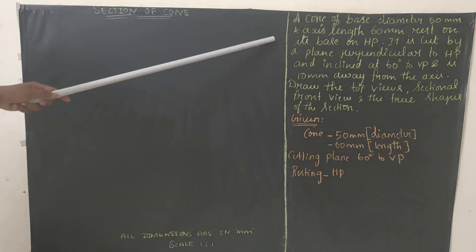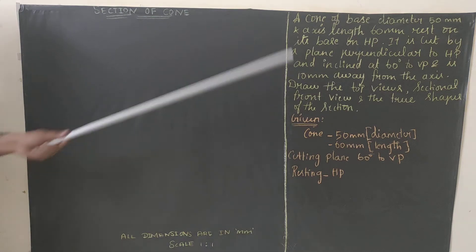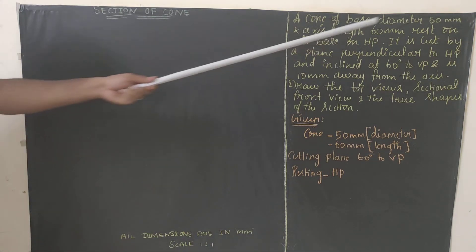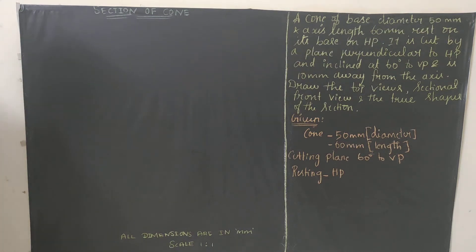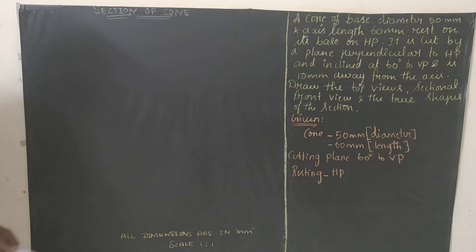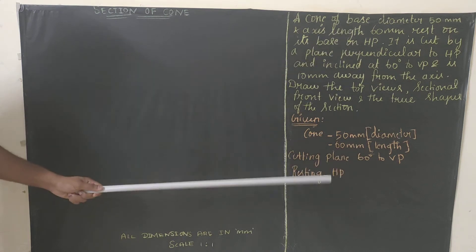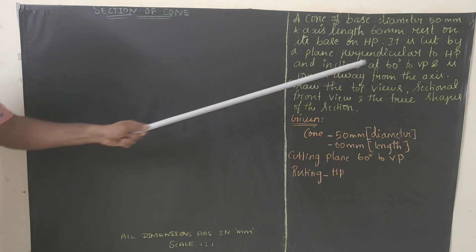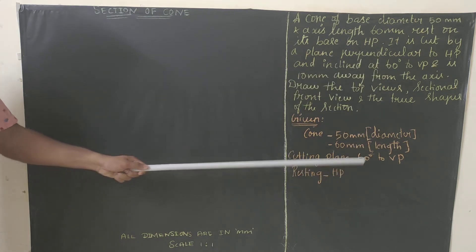A cone of base diameter — so what kind of solid we're going to draw? We're going to draw a cone. Cone means the base diagram will be a circle. Diameter of the cone is 50 mm, so radius of the circle will be 25 mm. Axis length is 60 mm — axis length means height of the cone is 60 mm. It rests on its base on HP.